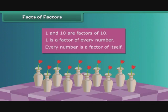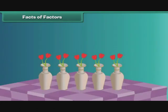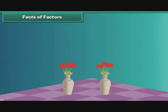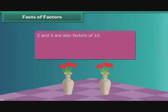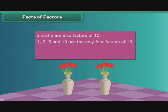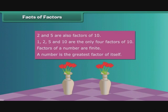Prerna's mother tries another arrangement, placing 2 roses each in 5 vases: 2 multiplied by 5 equals 10. She tries one more arrangement, placing 5 roses each in 2 vases: 5 multiplied by 2 equals 10. So 2 and 5 are also factors of 10. As there are no more arrangements possible, 1, 2, 5 and 10 are the only 4 factors of 10. Therefore, factors of a number are finite. A number is the greatest factor of itself.